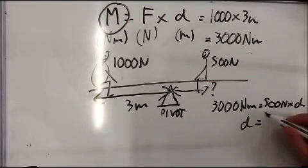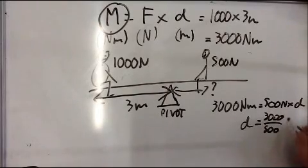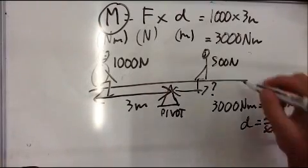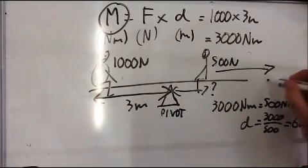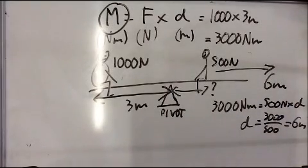If we rearrange this we get three thousand divided by five hundred which equals six meters. So Mr. Allen needs to sit right over here, six meters back in order to balance the seesaw.